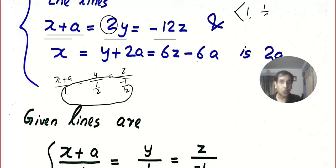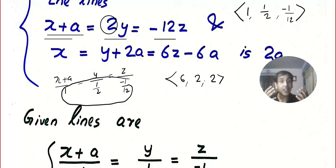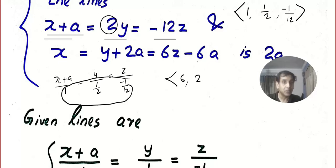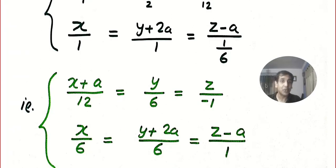Direction ratios are proportional quantities. For example if you get 6, 2, 2 you can multiply or divide throughout by any number to simplify. Here I can multiply the direction ratios 1, 1/2, −1/12 by the LCM 12 to get 12, 6, −1. So the direction ratios become 12, 6, −1 and now we have a clean standard-form equation. If you skip this step it will cause confusion.